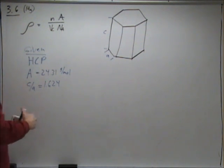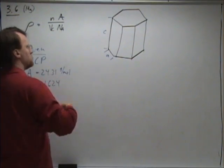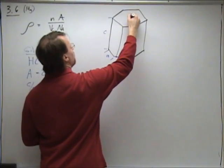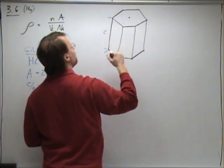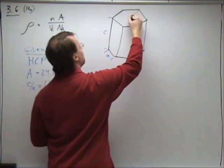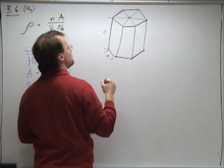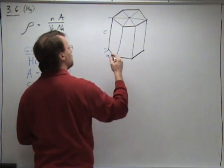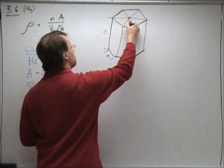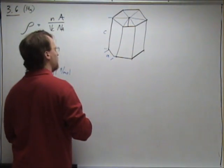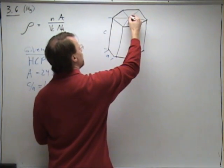Now to calculate the volume of the cell, we can break this up into six identical triangles, or in fact twelve identical right triangles.